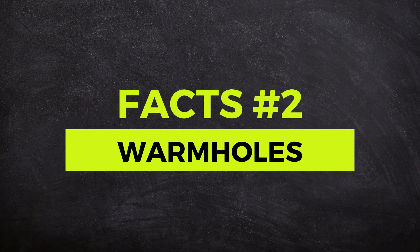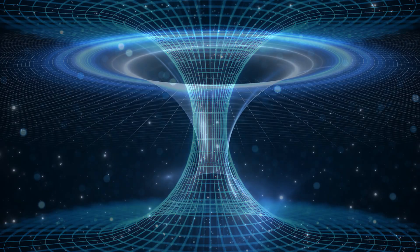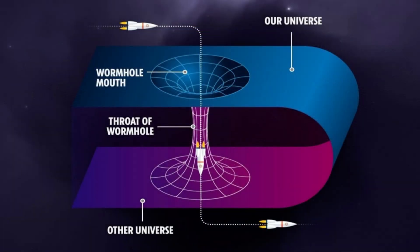Fact number two is wormholes — time travel shortcuts. According to Einstein's theory of relativity, wormholes could serve as shortcuts through spacetime. These hypothetical tunnels could potentially connect two different points in space and time, allowing for almost instantaneous travel between them. While we have yet to discover or create a traversable wormhole, the concept ignites our imagination with endless possibilities for time travel.